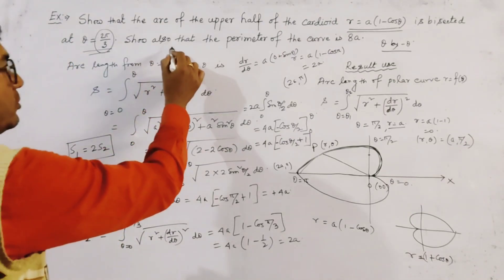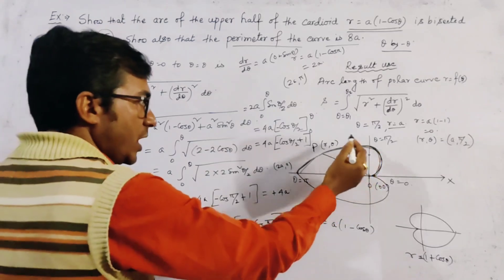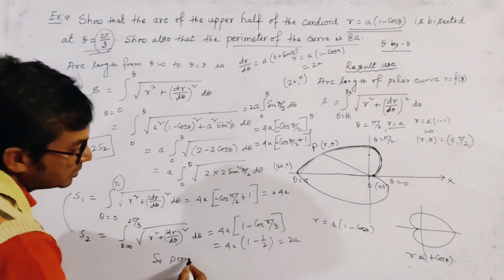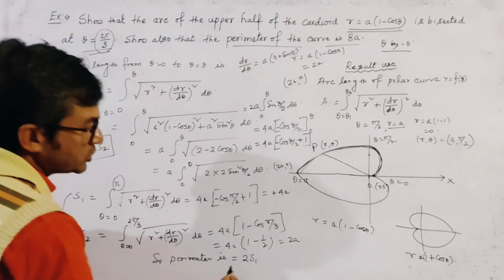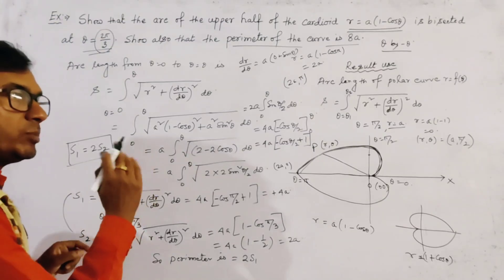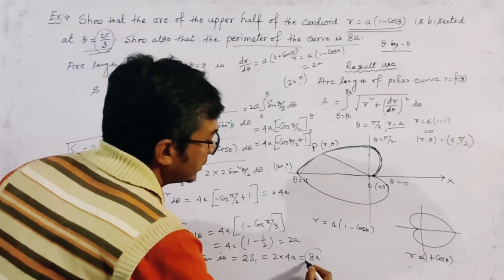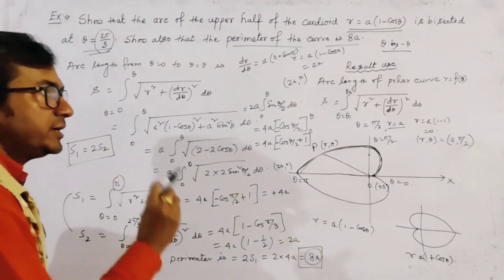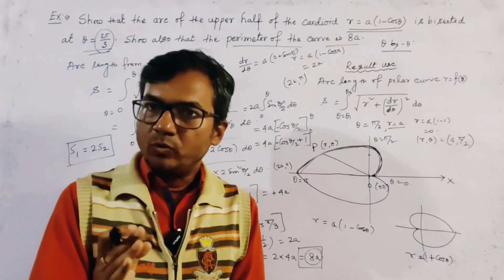We also need to find the perimeter of the curve, which is 8A. Since the length of the upper half is 4A and the curve is symmetric about the initial line, the perimeter = 2·S₁ = 2 × 4A = 8A. This is an interesting and important problem of arc length. Thank you for watching.